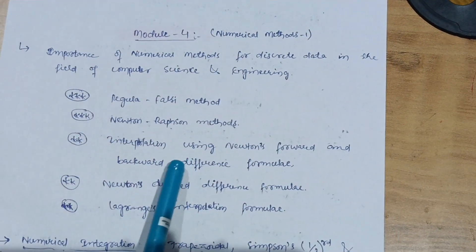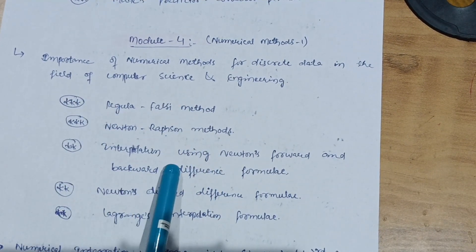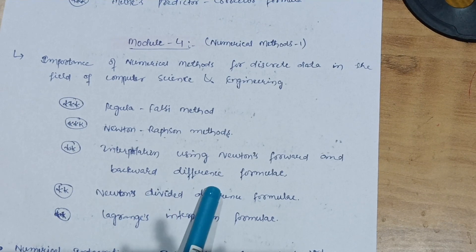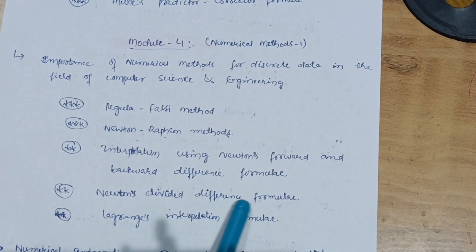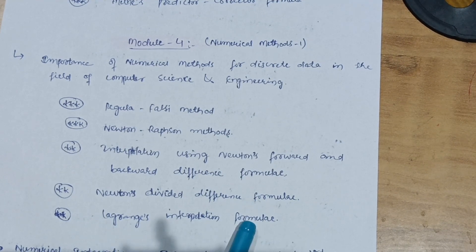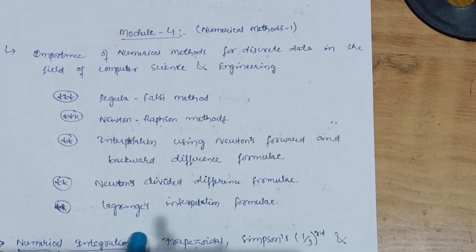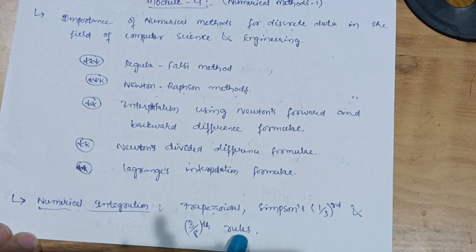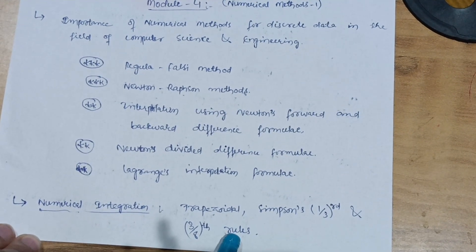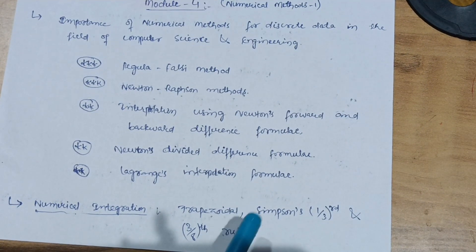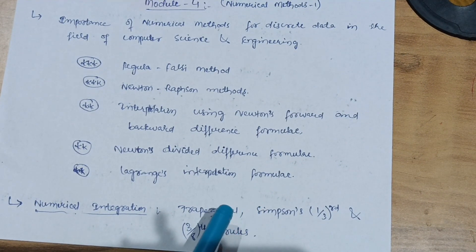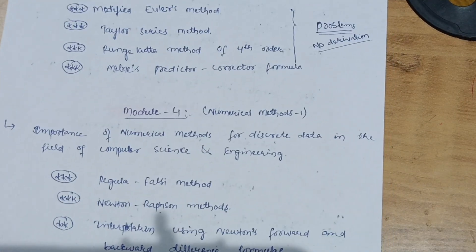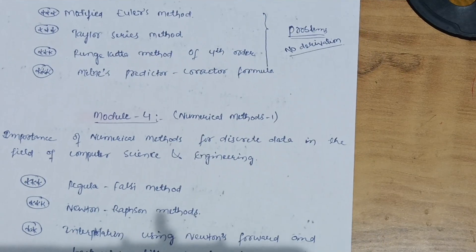Also cover interpolation using Newton's Forward and Backward Difference Formula — this is a most important question always asked in VTU examinations. Then Newton's Divided Difference Formula and Lagrange's Interpolation Formula. For numerical integration, cover Trapezoidal Rule, Simpson's One-Third Rule, and Simpson's Three-Eighth Rule — all formula-based concepts. I prefer you go through both parts so you can easily score 20 marks. These two modules — Module 4 and Module 5 — are your passing modules. Don't leave anything from this content.